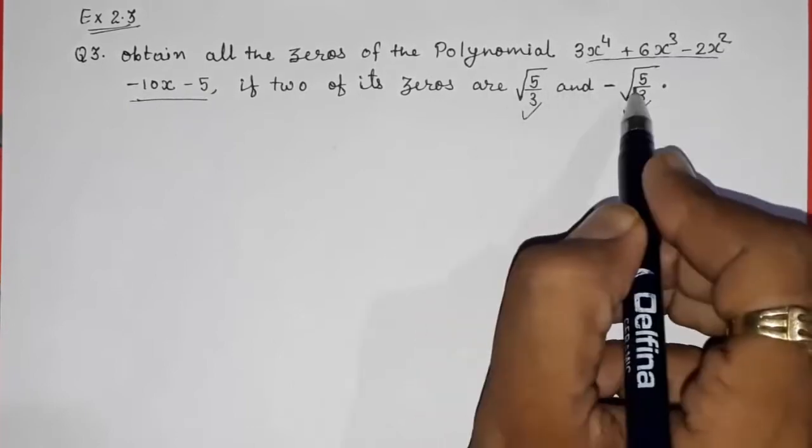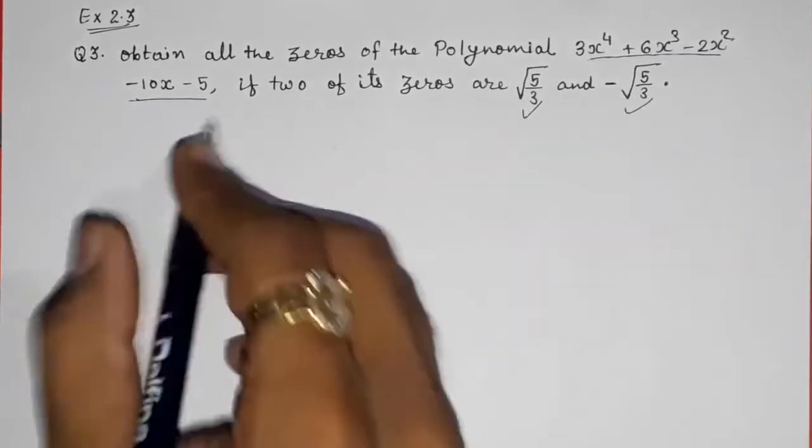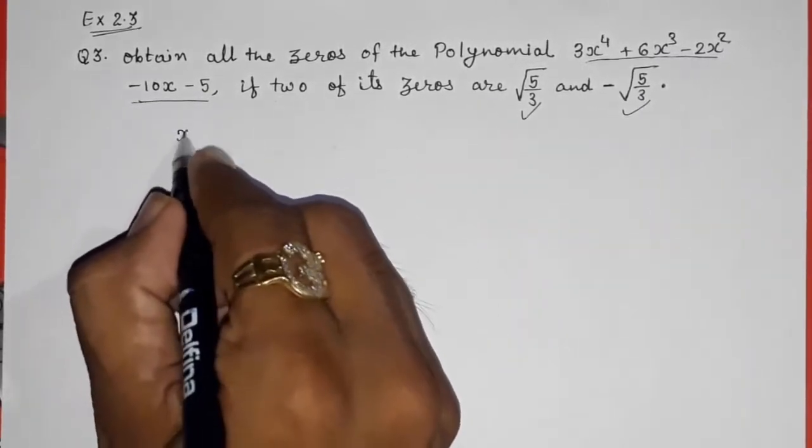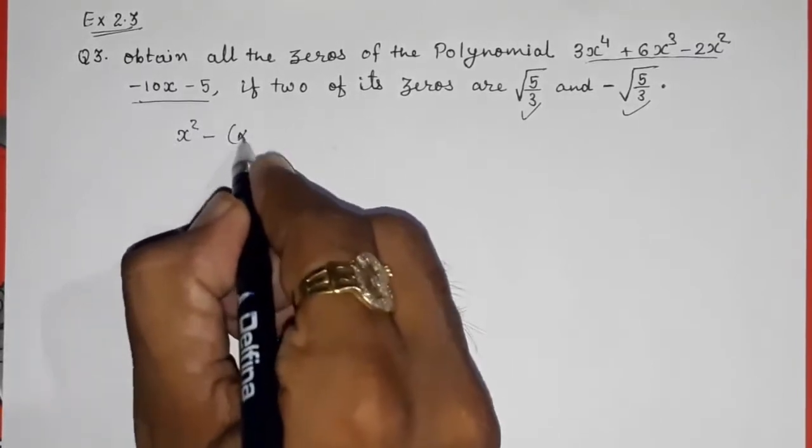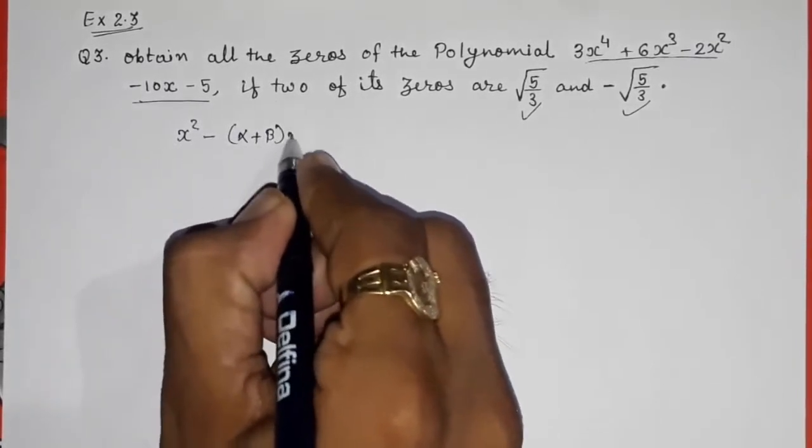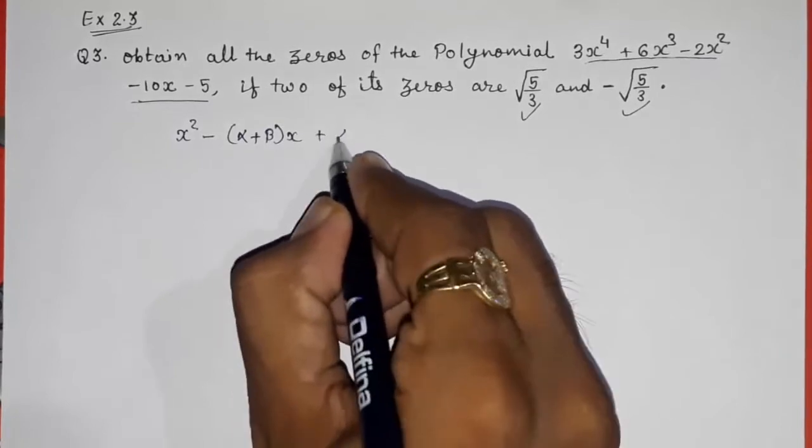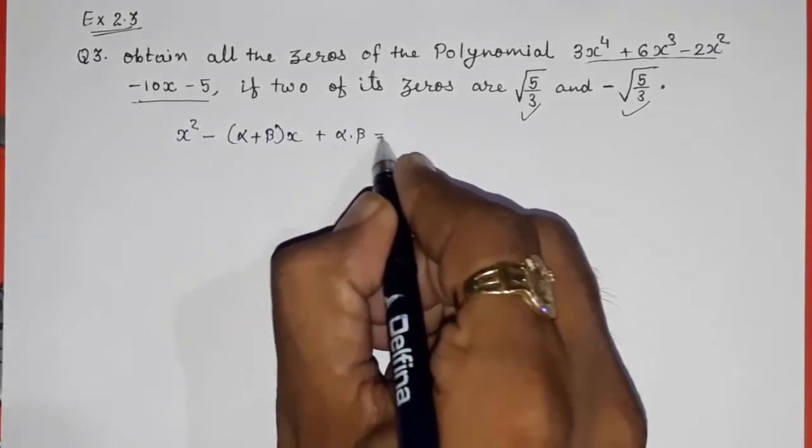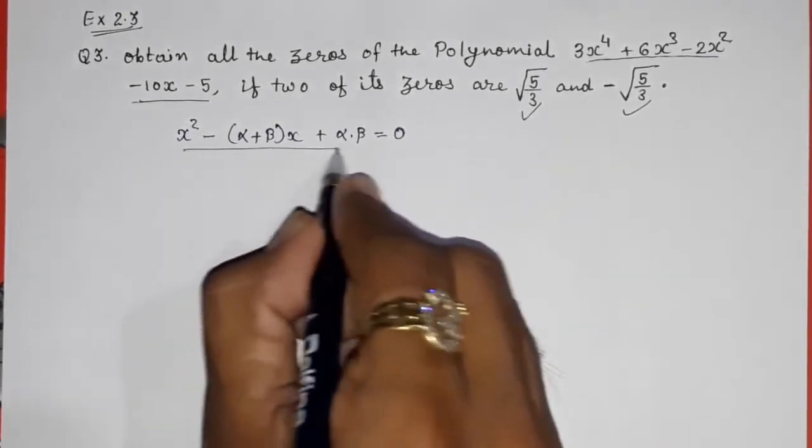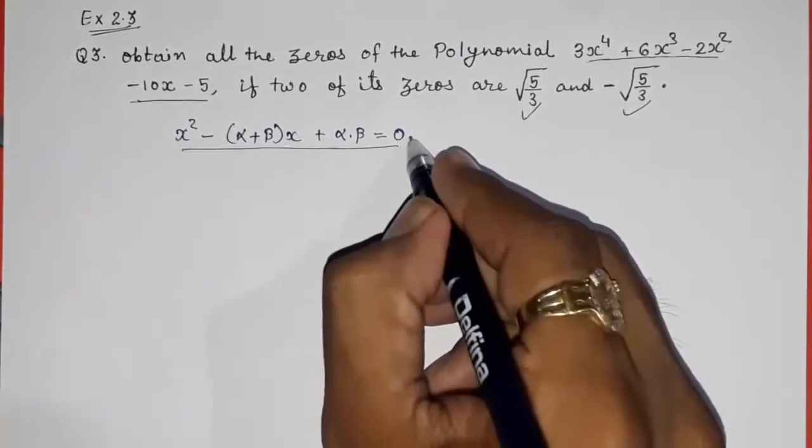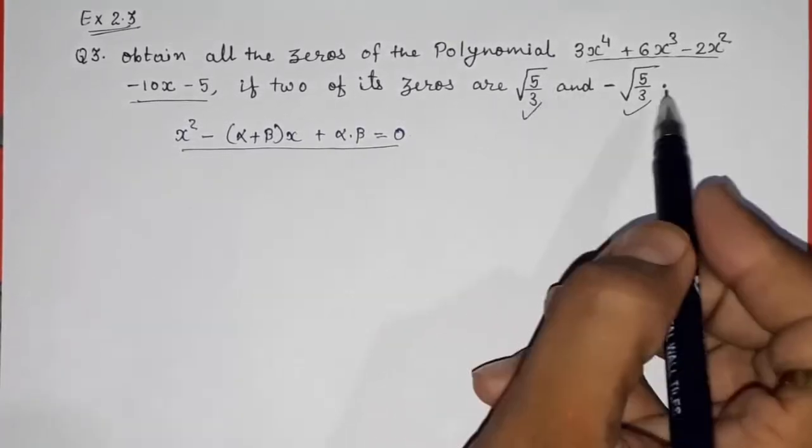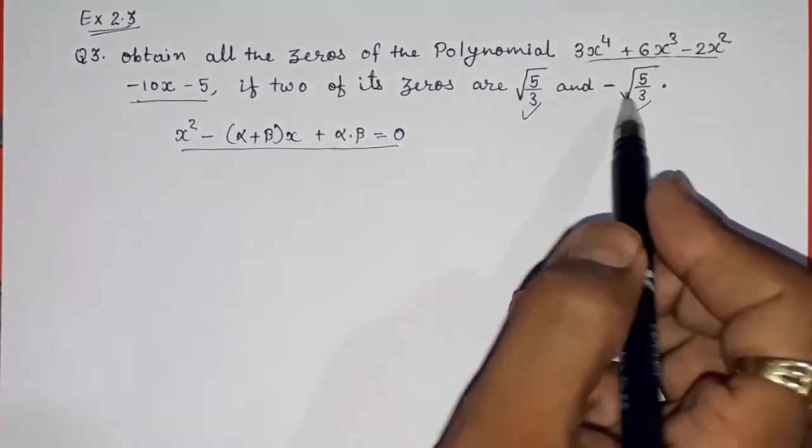So what we have to do? First, with the help of these 2 zeros we will form a quadratic equation. How? x square minus sum of zeros into x plus product of zeros gives you 0. This is the equation for forming the quadratic polynomials when zeros are given to you.